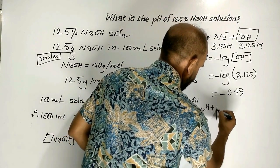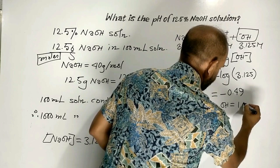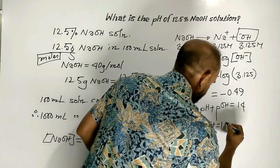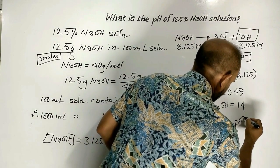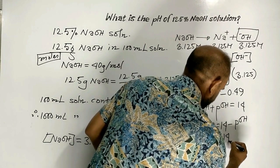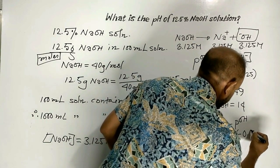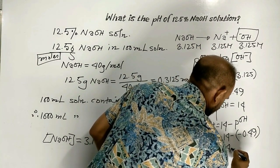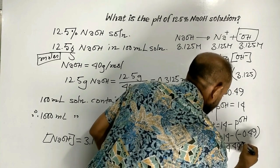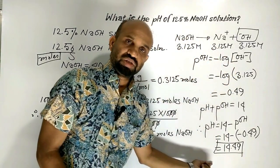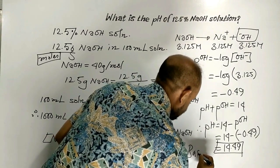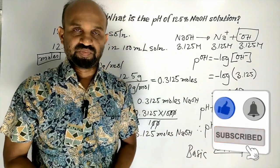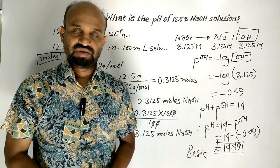We know that pH plus pOH equals 14. So pH equals 14 minus pOH, which equals 14 minus (minus 0.49), giving a pH of 14.49. This solution is highly basic in nature. That concludes the calculation of the pH of 12.5% sodium hydroxide solution.